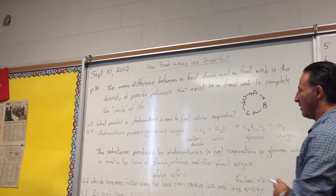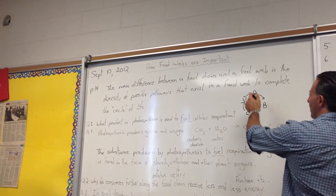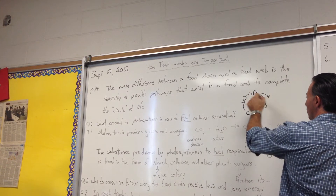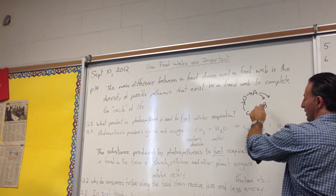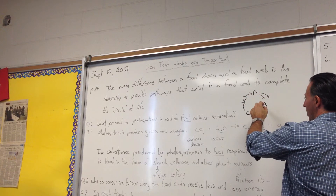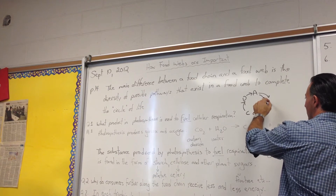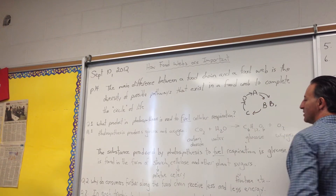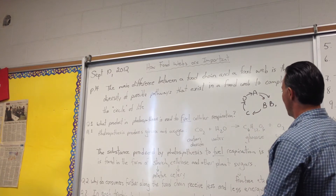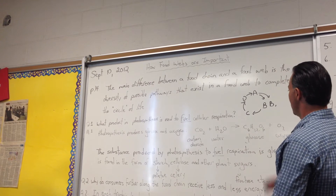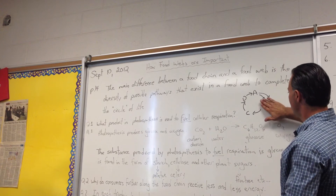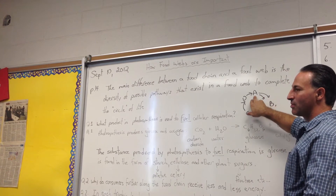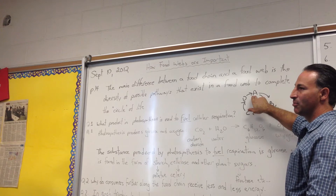But in a food web, you have multiple pathways. For example, the grasshopper might not only be eaten by a frog — it might also be eaten by a mouse. So let's say B1 is a different predator for the grasshopper. That way, even if all the frogs die off, the grasshopper still has a predator.